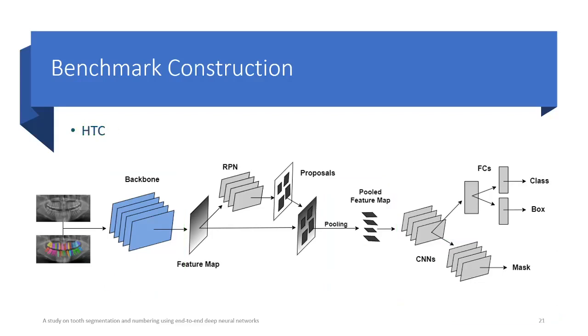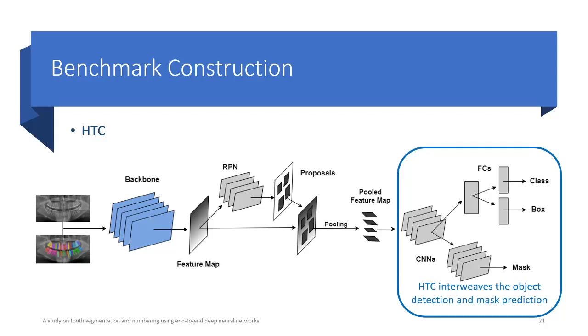The third architecture is the Hybrid Task Cascade, or HTC, which won the COCO 2018 challenge on the instance segmentation task. This work's main novelty was the modification of the end branches, which were interwoven for prediction.